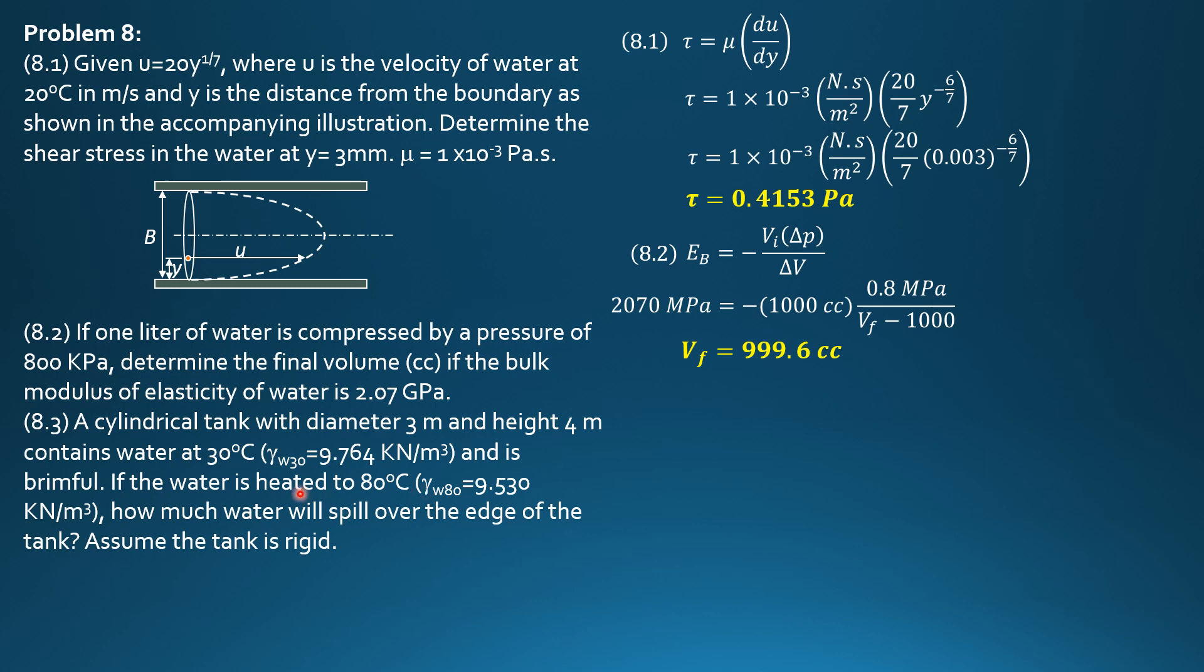A cylindrical tank with diameter 3 meters and height 4 meters contains water at 30 degrees Celsius, where the specific weight is 9.764, and it's brimful. If the water is heated to 80 degrees Celsius, it will expand. Therefore, we compute the final volume of water at 80 degrees Celsius.